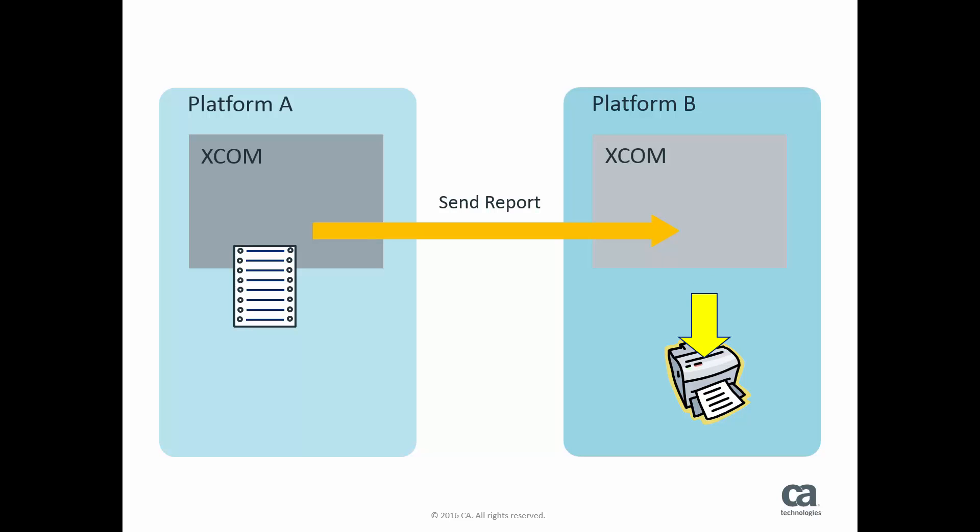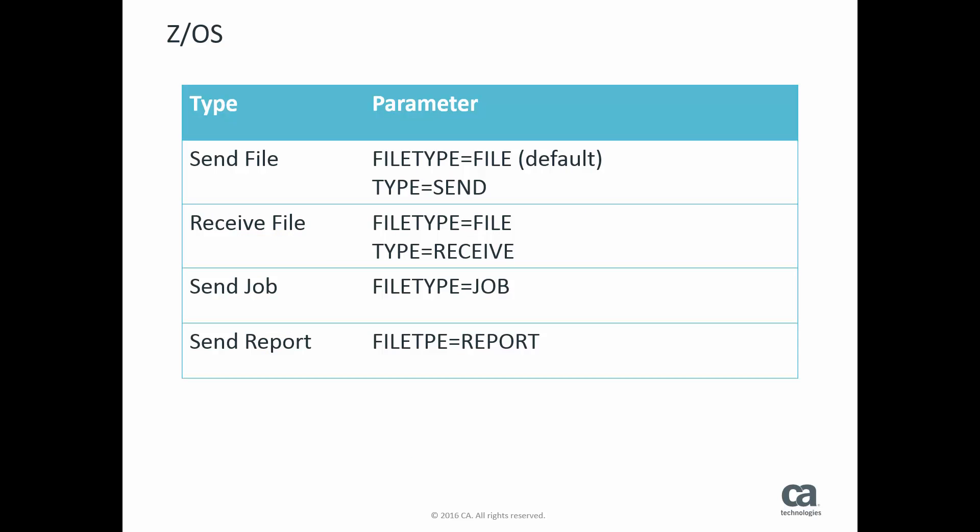The fourth and last type of transfer is sending a report, which is to be printed on the remote platform after successful transfer. On ZOS, you specify the desired type of transfer by using parameter FileType in the Sysin01 dataset. If FileType is File, then the additional parameter Type is required to specify if a Send or Receive is to be performed. The combination FileType equals File and Type equals Send is the default.